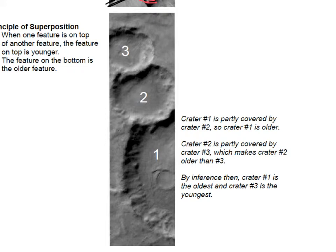The rim of crater two kind of obliterates or overwrites that part of crater one. So crater one was there first, crater two hit — just fortuitously close enough that it impacted the existing crater — and then crater three came in later.